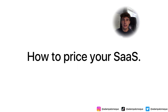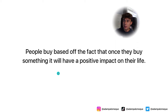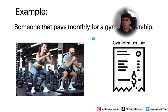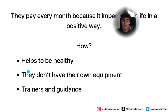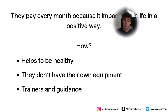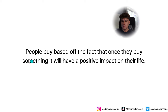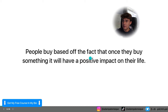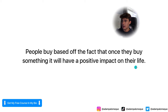The first thing we need to understand is why do people buy? People buy based on the fact that once they buy something it will have a positive impact on their life. An example would be someone that pays a gym membership every single month — they become more healthy, they get equipment they don't have at home, and they get trainers and guidance at the gym as well.